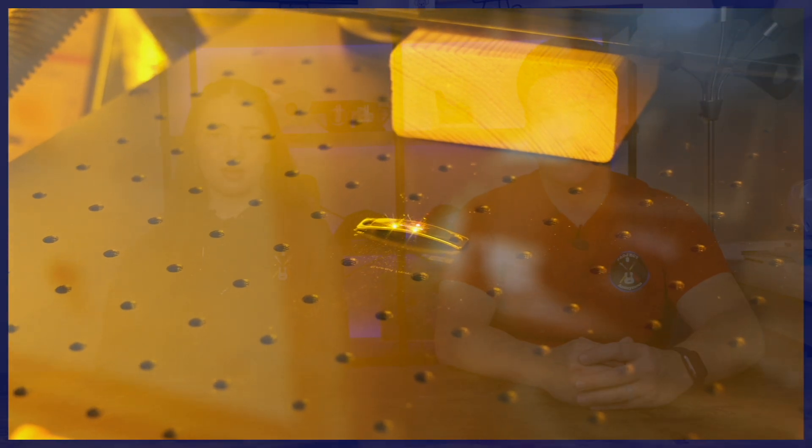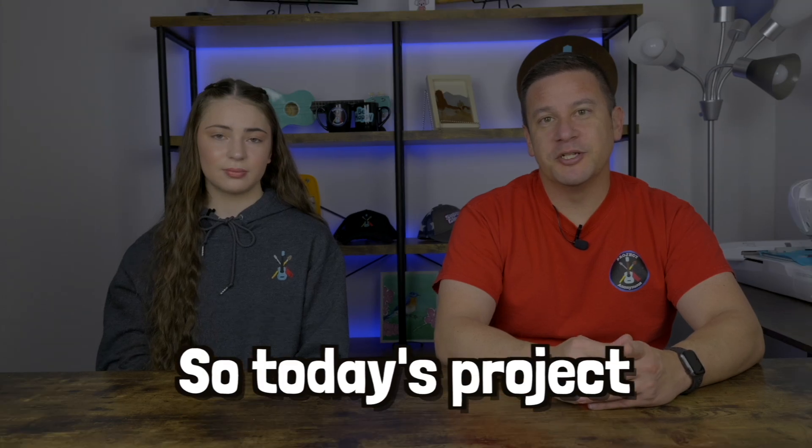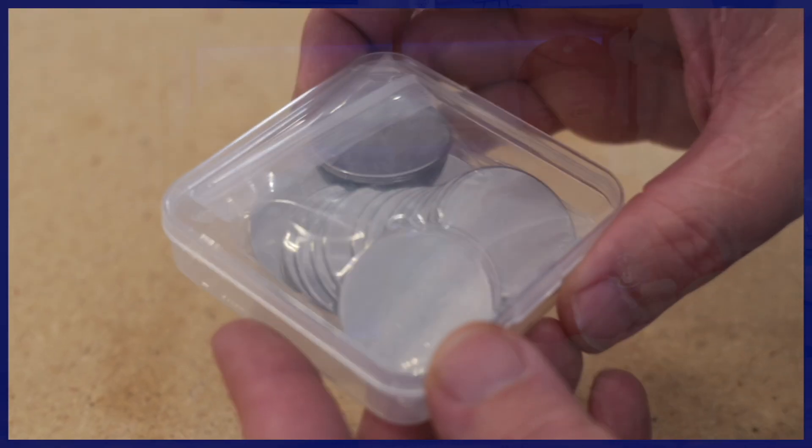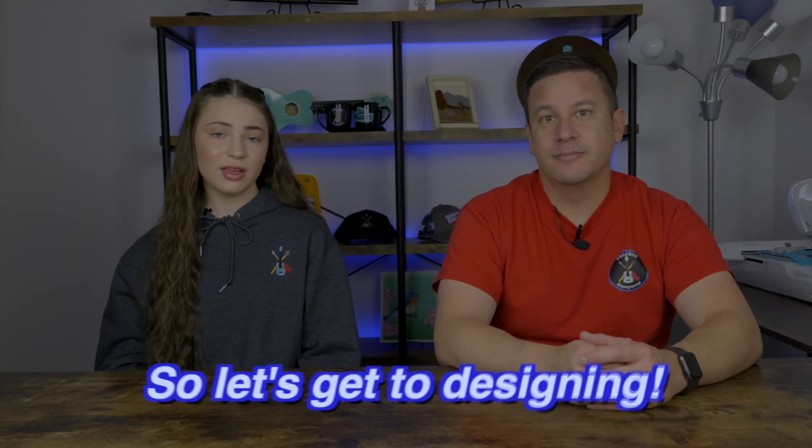So we've done a few projects with different stainless steel and trying to engrave on it, but we haven't done a realistic image on it before. Today's project, we're going to use those medallions that we used before, and we're going to get a picture of Daisy to try to get an engraving on there that looks more realistic as an image. So let's get to designing.